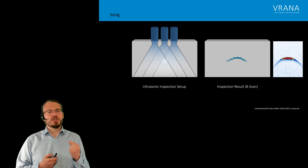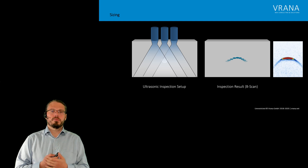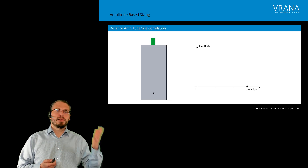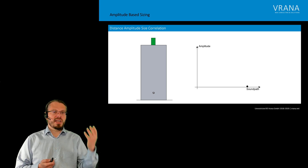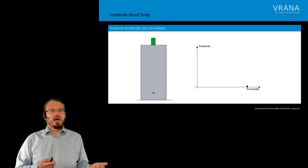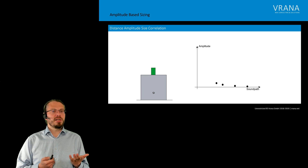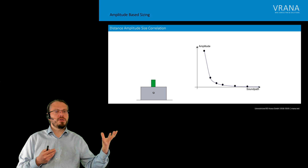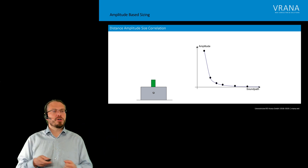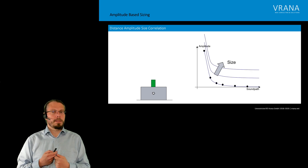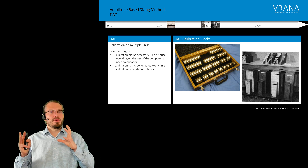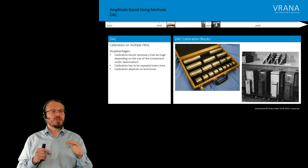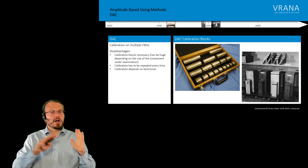How do we get information on the size from that image for indications smaller than our beam diameter? There is something called distance amplitude size correlation. If we think about a component with an indication at a certain sound path, we get a certain amplitude. If we make that sound path a little bit shorter, that amplitude goes up for the same indication size — a certain relation between amplitude and sound path. And if we have a bigger indication, that curve shifts. We can use this concept by using calibration blocks with different distances and different indication sizes.